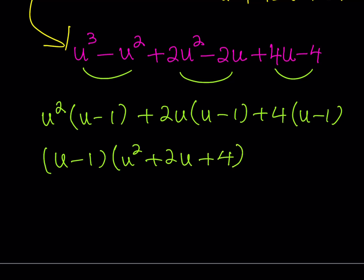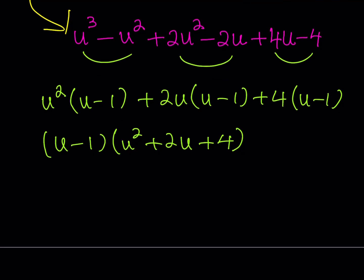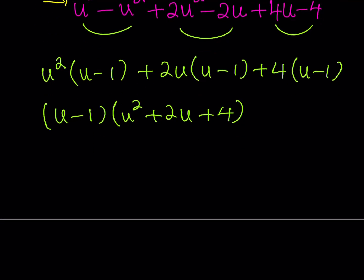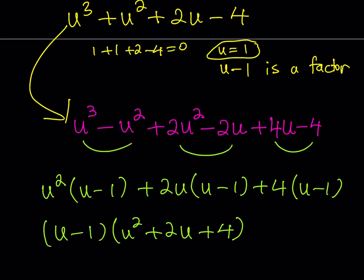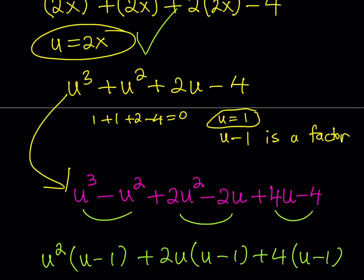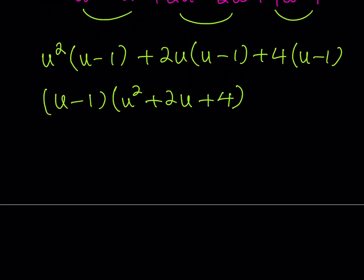Is that all? No. We've got to go back and back substitute. What is u? u is equal to 2x. Now, I'm going to replace u with 2x. So, (2x - 1). And then if u squared is (2x)², you should get 4x². If you double 2x, you should get 4x. And 4 is 4 all the time. It's a constant. Is this the answer? No.